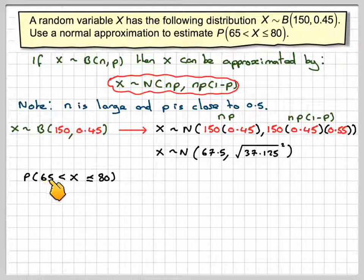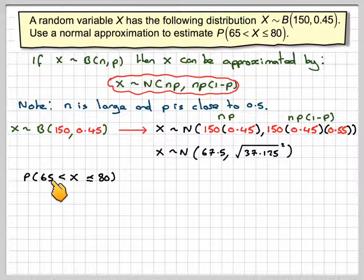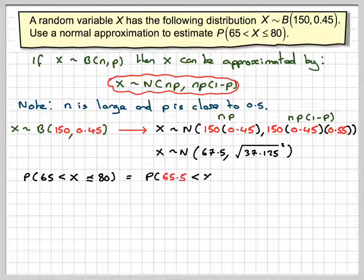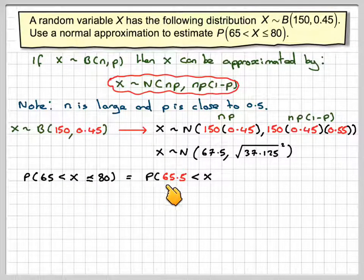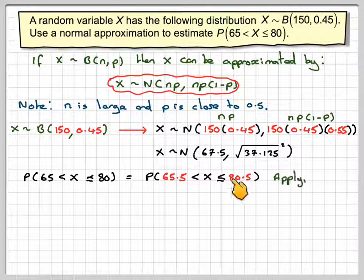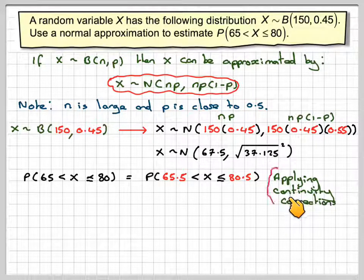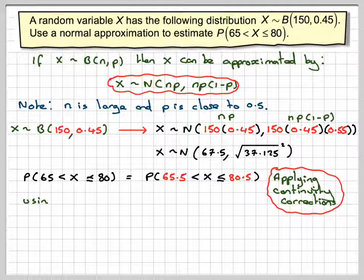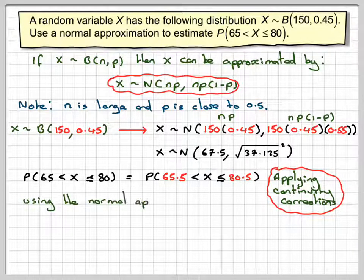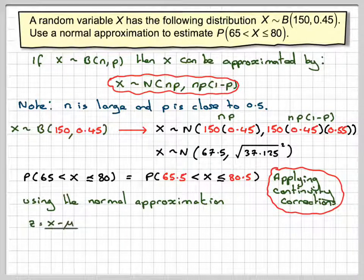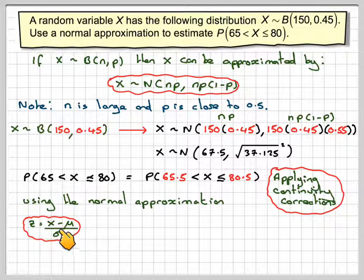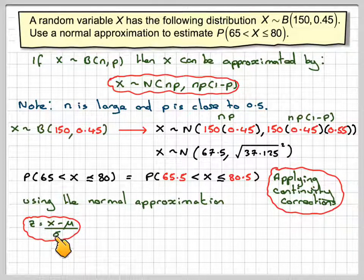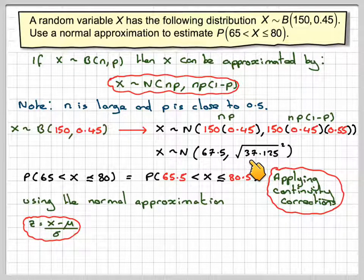So the probability that X is greater than 65 and less than or equal to 80. The continuity correction for that one is going to be 65.5, because we don't want to include anything lower than that, but less than 80.5. So applying the continuity correction, you need to make sure you're applying the correct continuity correction. Using the normal approximation, we can standardize X to the standard normal curve by using z equals (x minus the mean) over the standard deviation, the mean being 67.5, the standard deviation being the square root of 37.125.